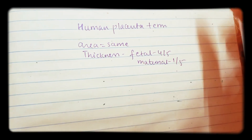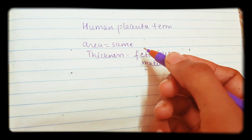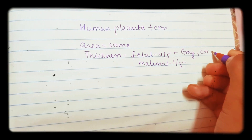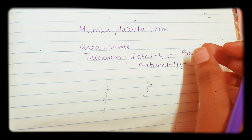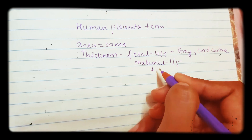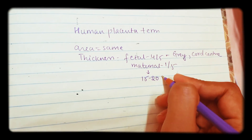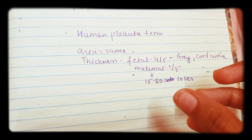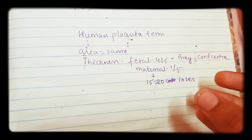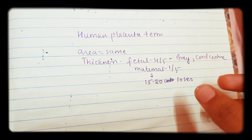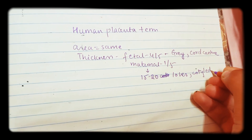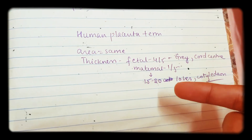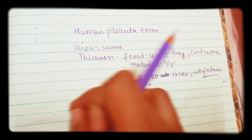On the fetal side it looks gray in color and there will be an umbilical cord in the center, with a shiny surface. On the maternal side, which is only one-fifth, it has 15 to 20 lobes, is reddish dull in color, without any membranes or cords. It also has cotyledons. A cotyledon is a functional unit of the placenta where one stem cell of a villus and its branches supply each cotyledon. Cotyledons are present on the maternal side.